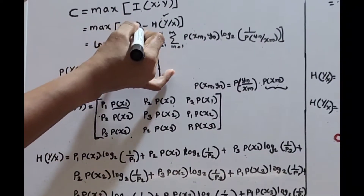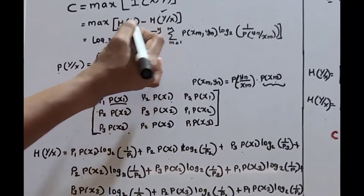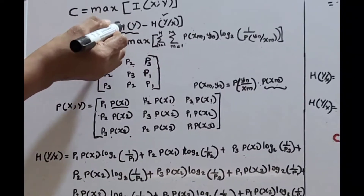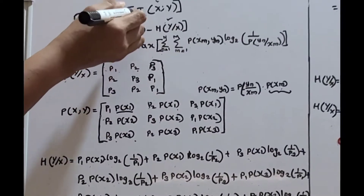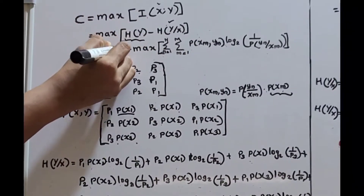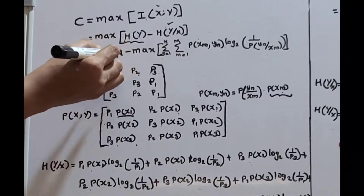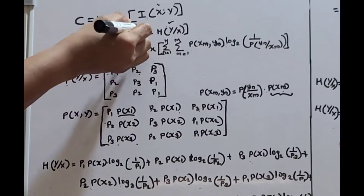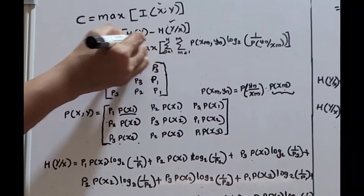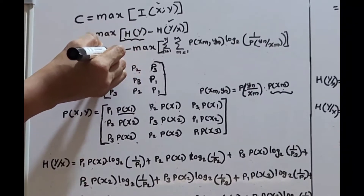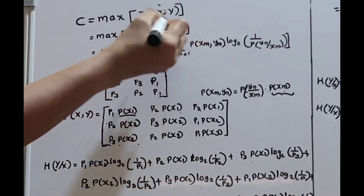The maximum of H(y) — that is, maximum entropy — we have already discussed that maximum entropy is log k. Here the variable is y, so the maximum entropy is log N, where N is the number of variables in y. So the maximum entropy H(y) is log N to the base 2, minus the maximum of the conditional entropy.